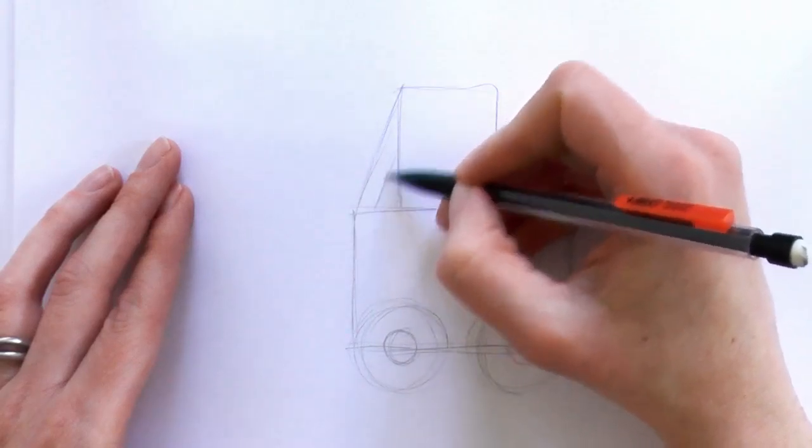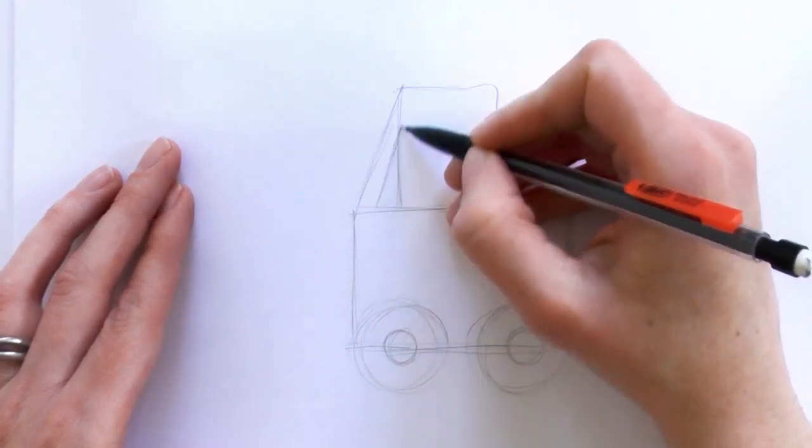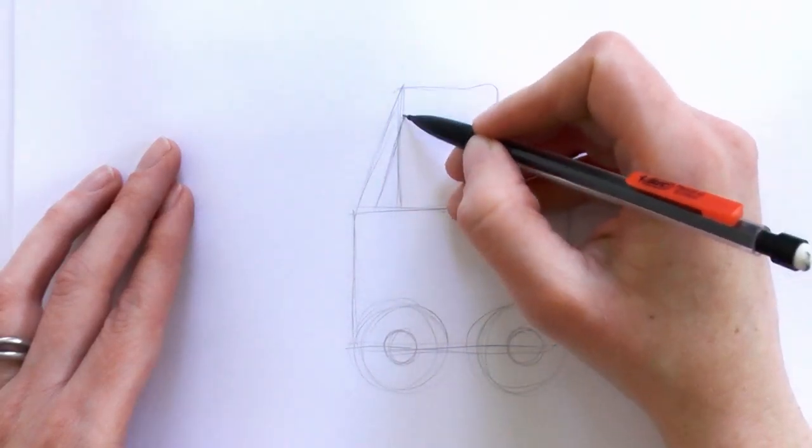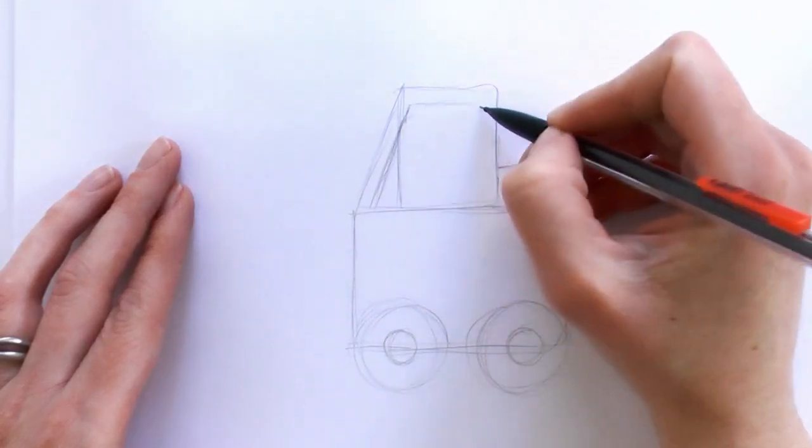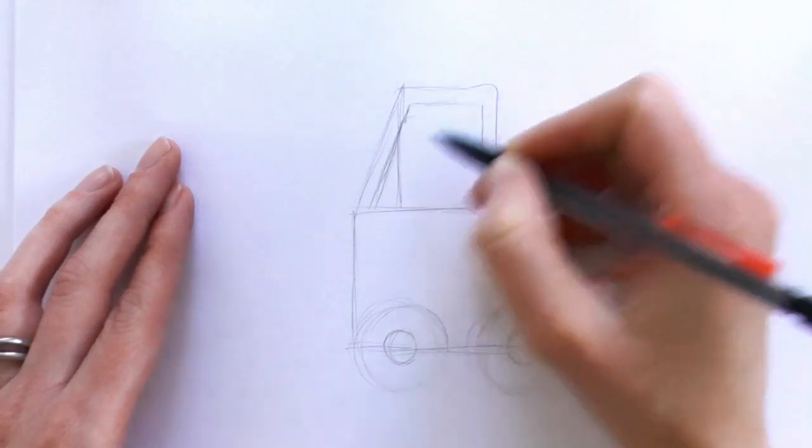Then what we do is we just bring a line up, like that, and then across, and then down to make a window.